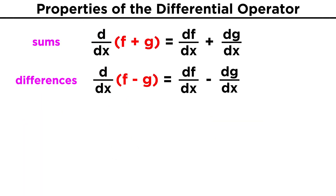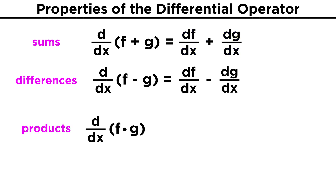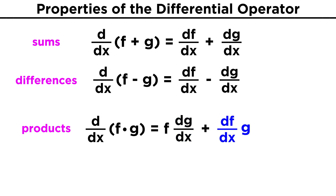For example, this differential operator distributes across sums and differences, so d dx of the sum of two functions f and g is the same as the sum of df dx and dg dx. Meanwhile, when operating on a product of functions f times g, this will be the same as the product rule we learned previously, so d dx of fg equals f dg dx plus df dx times g.